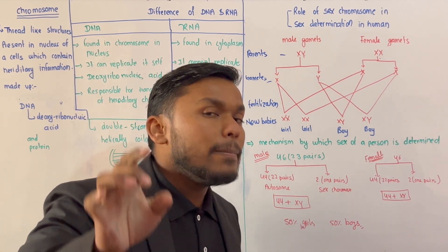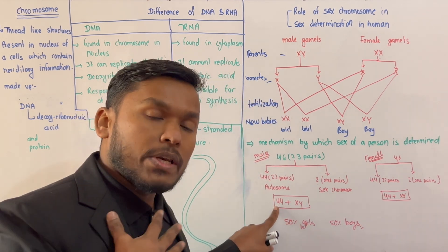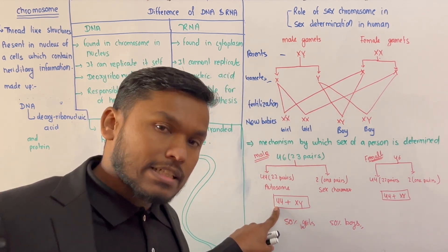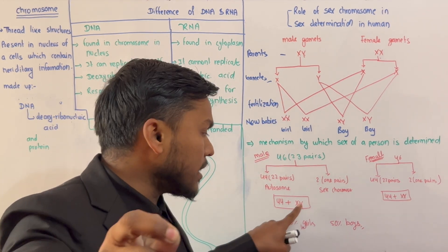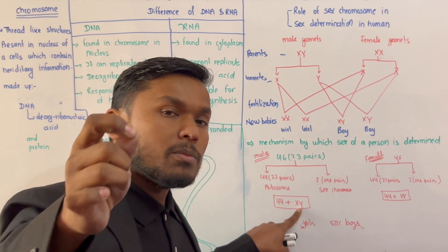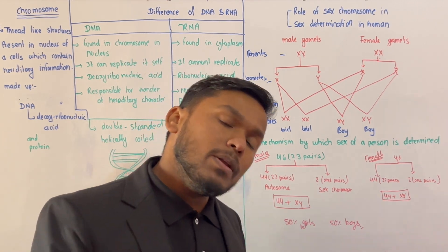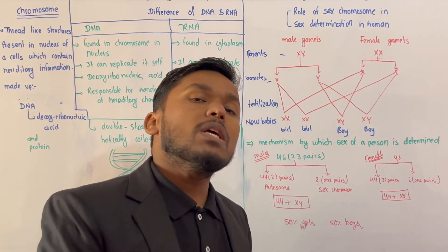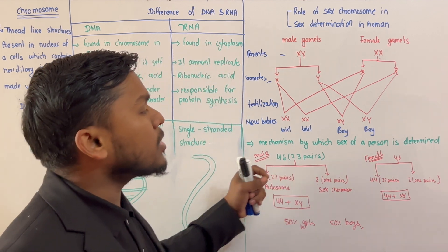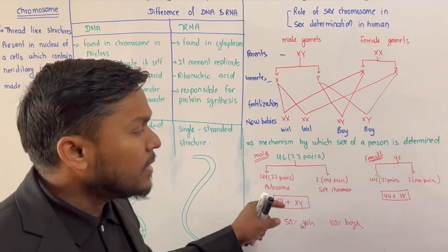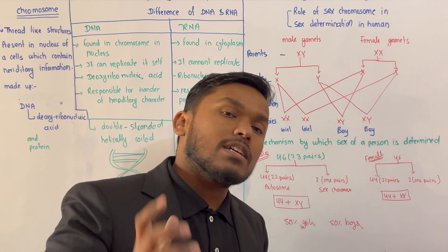We have 44 autosomes for other physical characters. For gender, the sex chromosomes are X and Y. Males are XY and females are XX. We can show this through a sex determination cross.